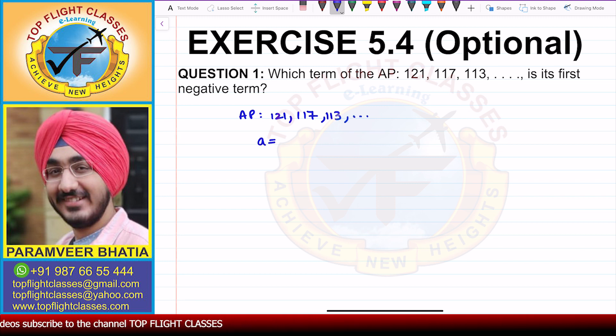In this case, the first term is 121. And if we find the common difference, that is the second term which is 117 minus the first term which is 121. That comes out to be minus 4.